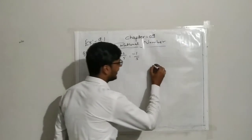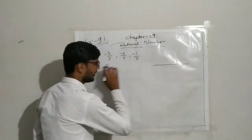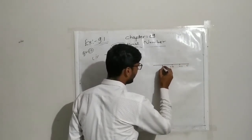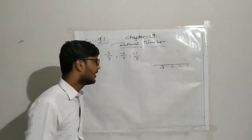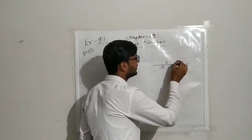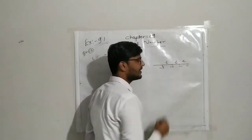On the number line, the denominator is the same for all. Arranging in ascending order means this number is less than this, this number is less than this, this number is less than this.